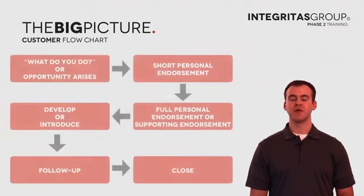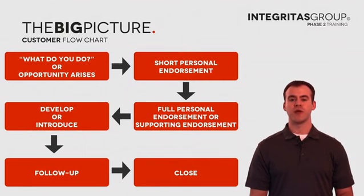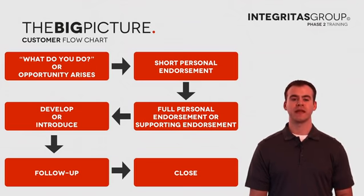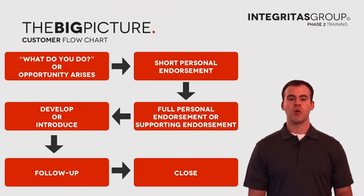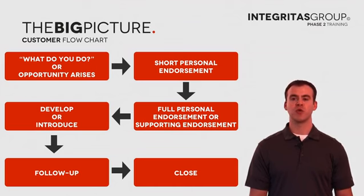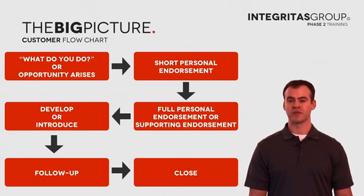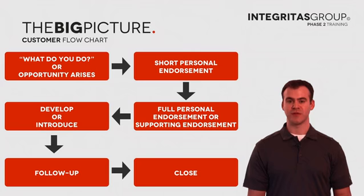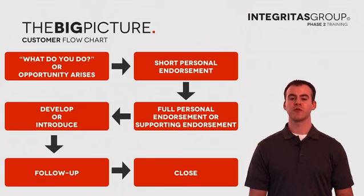Here's a customer flowchart to walk you through the process — I'll go into every step as we go through this training. That first block is how the conversation starts: someone asks 'What do you do?' or there's an opportunity to share your product or service. That's where you would use your short personal endorsement — a very quick, short phrase or sentence or two to tell them what you do or to see if they have any interest in learning more. And if they're intrigued, that's where you move into what I call your full personal endorsement or a supporting endorsement.